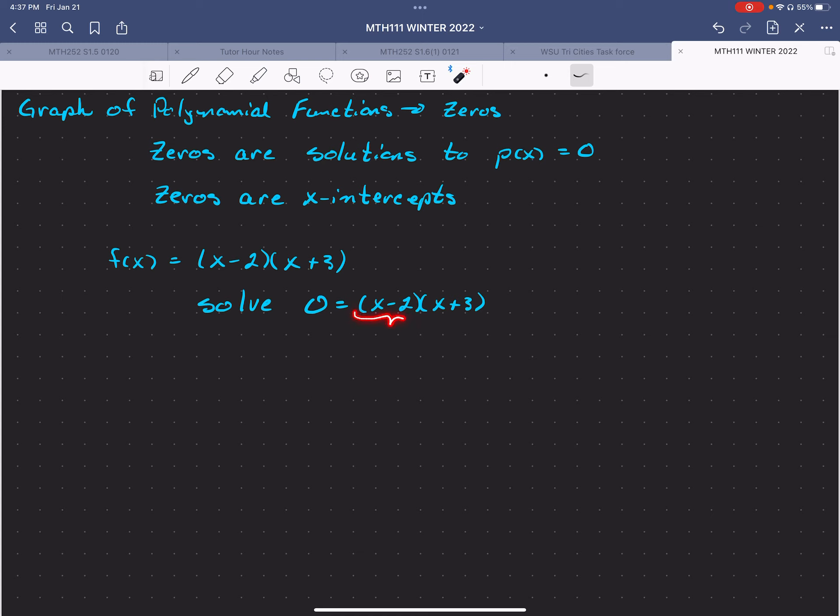In other words, we know that if this whole product equals 0, that means x minus 2 equals 0 or x plus 3 equals 0, which means that x equals 2 or x equals negative 3.